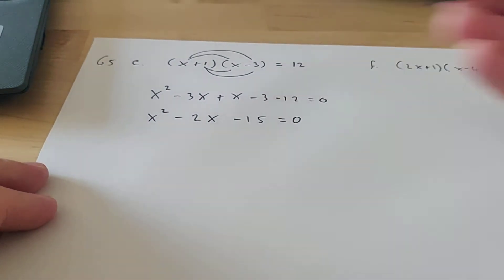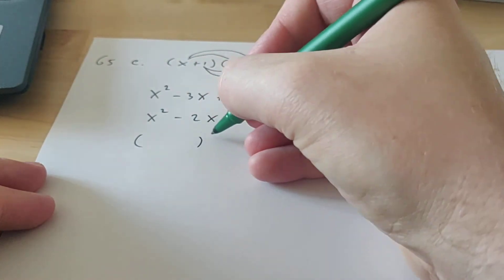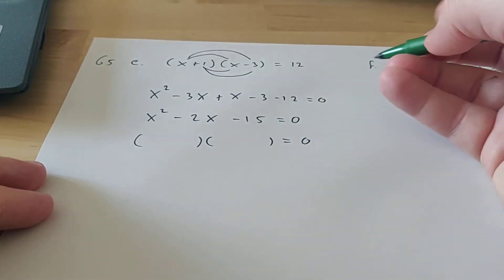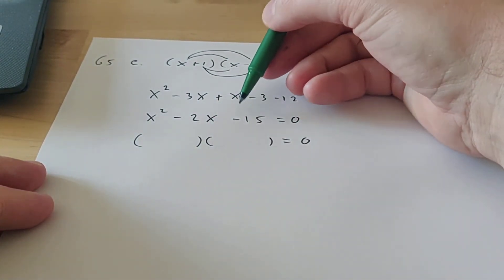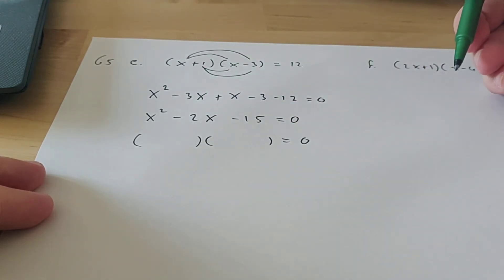So this is what you have now. And now we have to factorize it again. We see three different things. So you have to use the product sum method. That means that you have to find two numbers. If you multiply them, you get minus 15, and when you add them, you get minus 2.